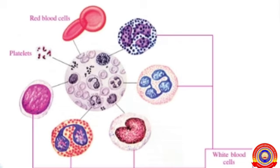Hi dears, welcome to our science class. In the previous class we discussed about the components present in the blood. Blood is composed of cells like red blood cells, white blood cells, platelets, and the fluid part called plasma.